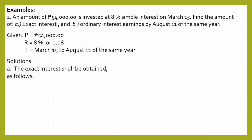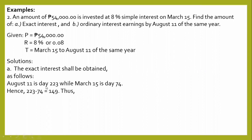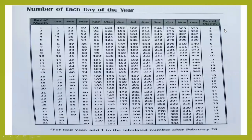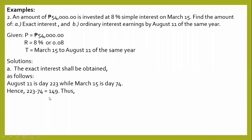For letter A, the exact interest is obtained as follows. From the table provided, August 11 is day 223 from January 1, while March 15 is day 74. Therefore, 223 minus 74 equals 149 days from March 15 to August 11. As shown in the table, March 15 has 74 days from January 1, and August 11 has 223 days from January 1. Subtracting gives 149 days.